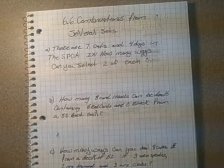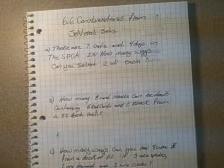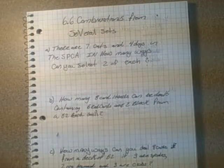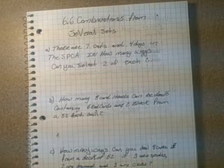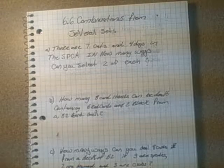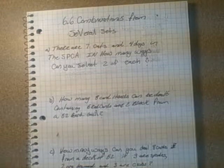This is section 6.6, combinations from several sets. This is simply using the combination formula and counting principle together to calculate problems. We're going to start by doing about four or five different examples here.